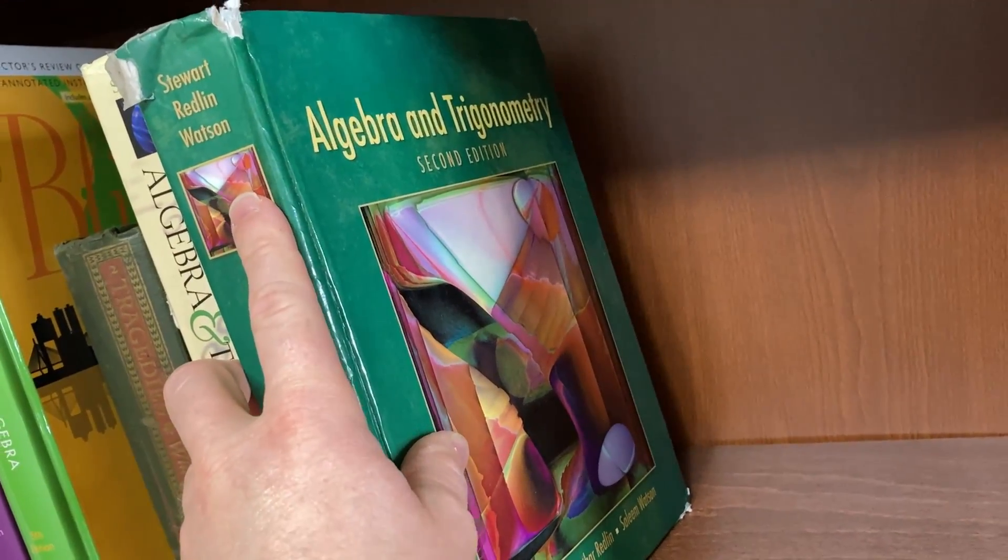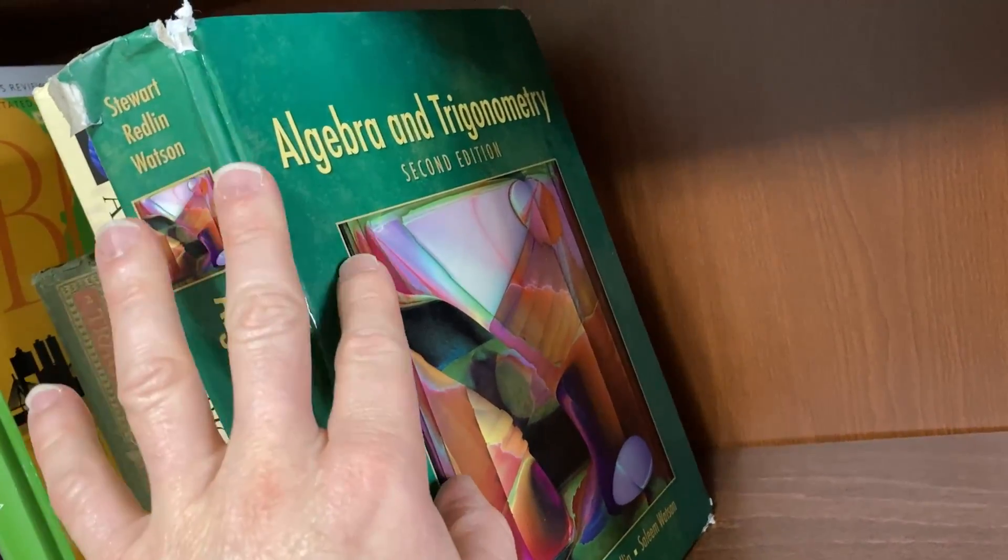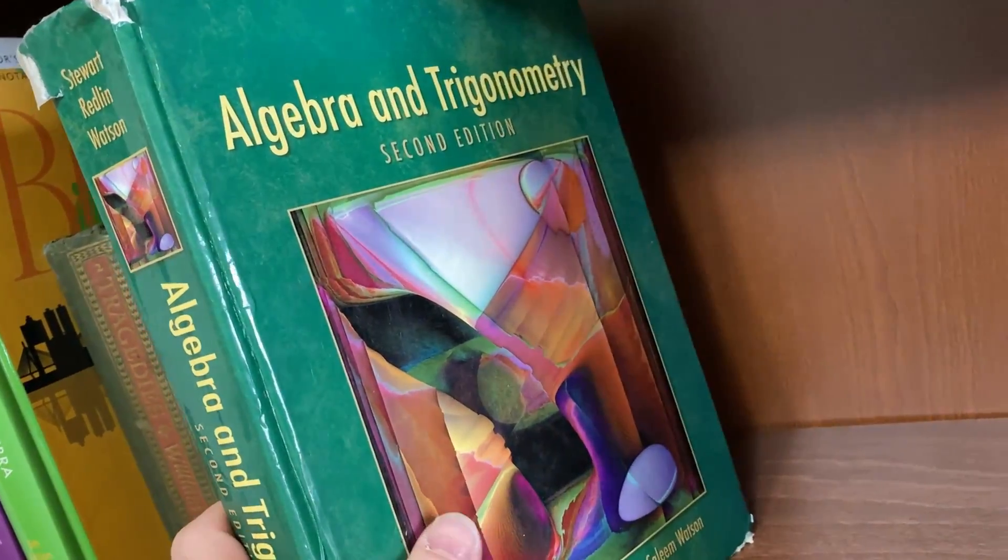So it's just a random book on algebra and trig. If you're watching this video, you probably have to take some algebra and maybe some trig. And if you have to take calculus, this is stuff you have to know anyways. So this is a good first choice.